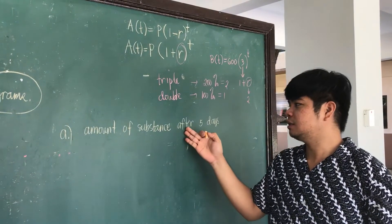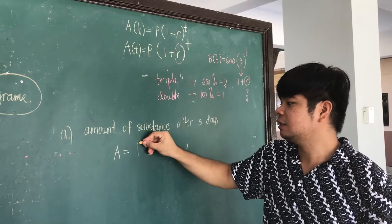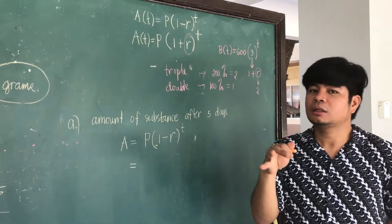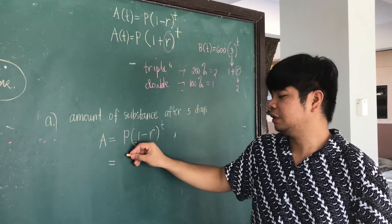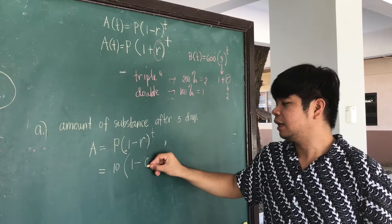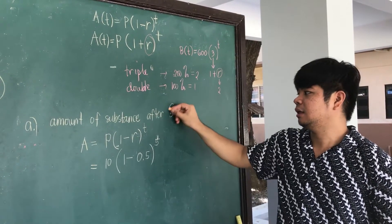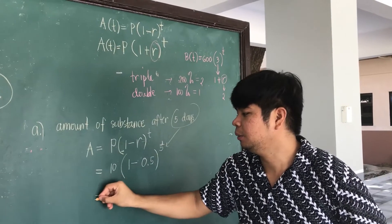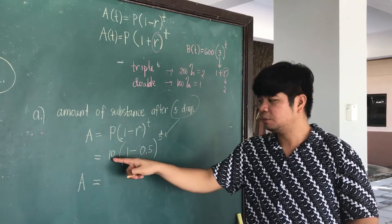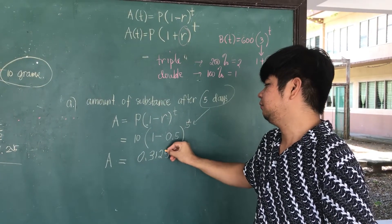What will be the amount of substance after 5 days? Using the decay formula: amount equals 10 times (1 minus 0.5) raised to 5, since 50% equals 0.5 in decimal form and t equals 5. Solving from the exponent before multiplying by 10, the amount of substance left after 5 days is 0.3125 grams.